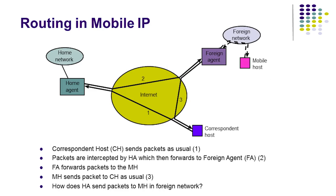The mobile IP routing operates as follows. When a correspondent host wants to send a packet to a mobile host, it transmits a standard IP packet with its address as the source IP and the mobile host address as the destination IP, as illustrated as step one in the figure. This packet will be intercepted by the mobile host's home agent. If the mobile host is located in the foreign network, the home agent simply forwards the packet to its foreign agent, as illustrated as step two. The foreign agent forwards the packet to the mobile host, and the mobile host sends packets to the correspondent host as usual, as illustrated as step three.